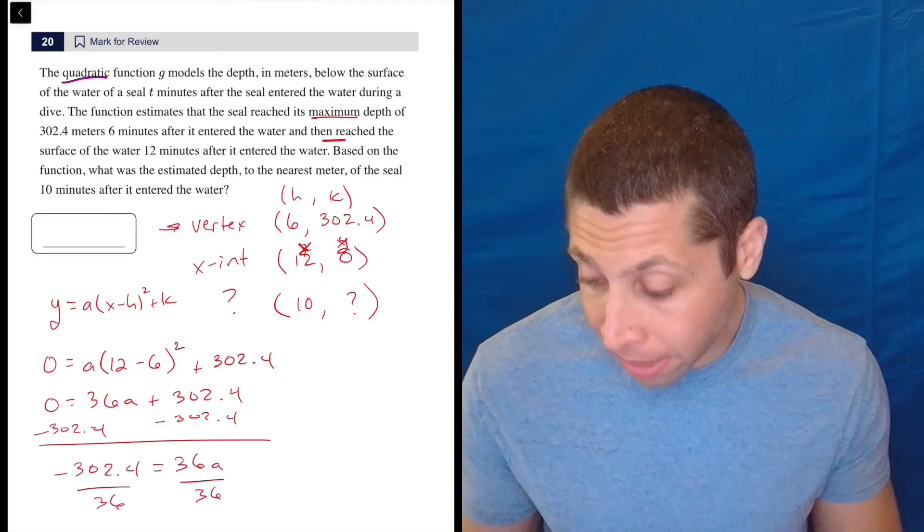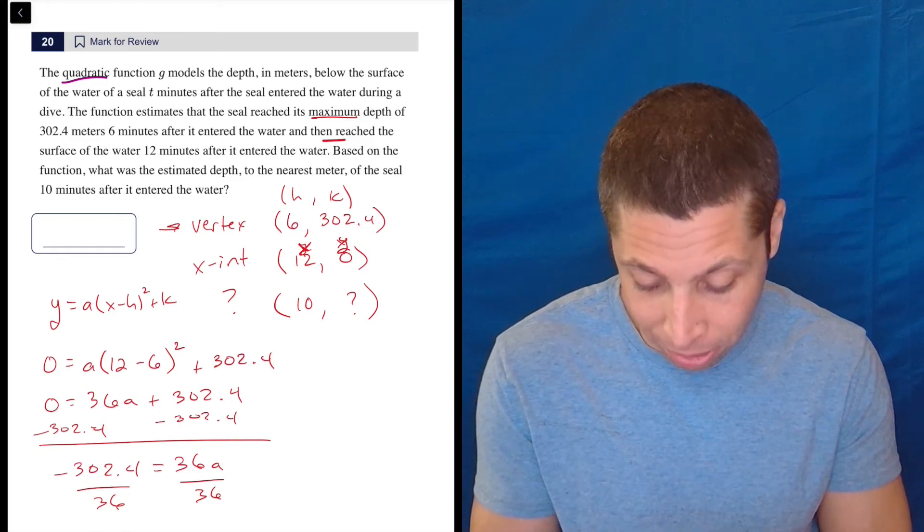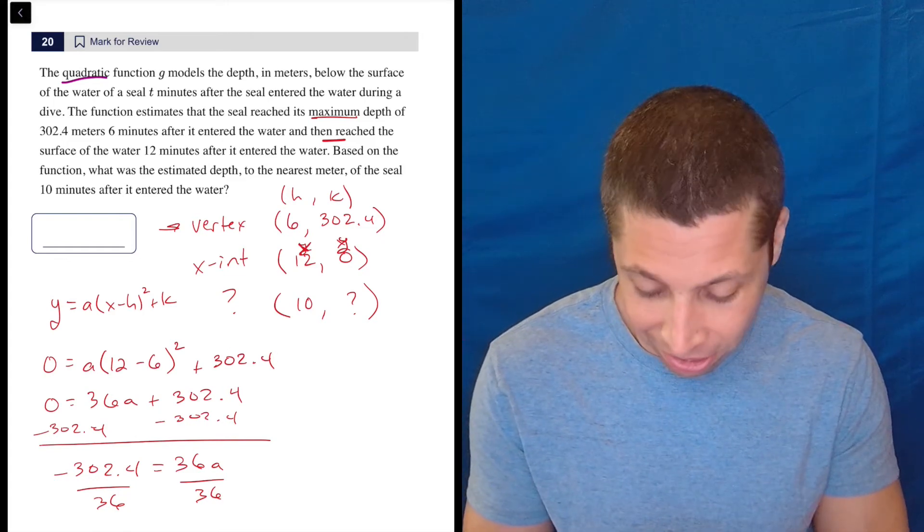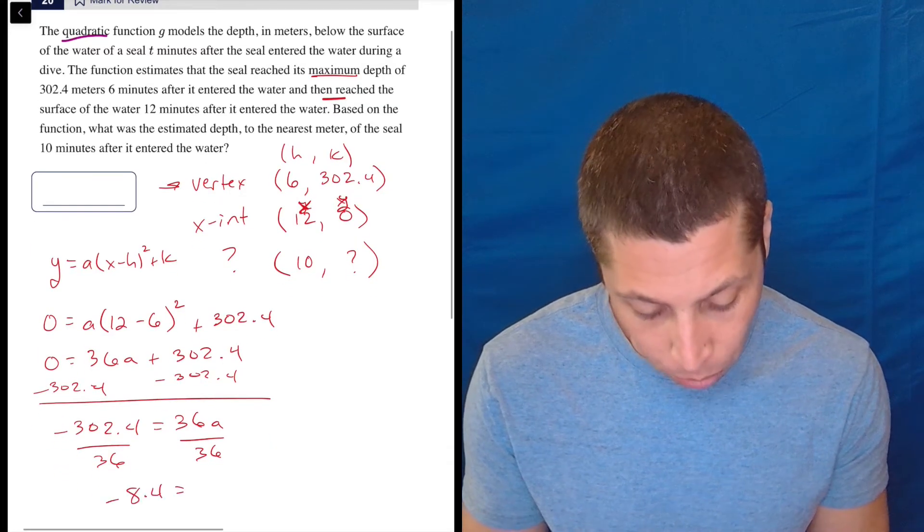Now, why am I solving for A? I don't know. I've got an equation with one variable, one missing piece. Let's do it. Don't ask too many questions. It's one of those things that you should just kind of do. And so if we do that, we get that negative 8.4 is A.